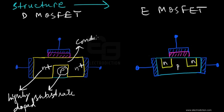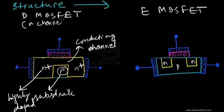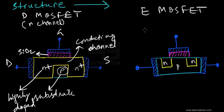This channel is made up of electrons, so this D-MOSFET represents an N-channel D-MOSFET. These are the various parts of the N-channel D-MOSFET. There is also the silicon dioxide insulator layer. As with other FETs, the left terminal is the drain, the right one is the source, and there is a gate terminal.